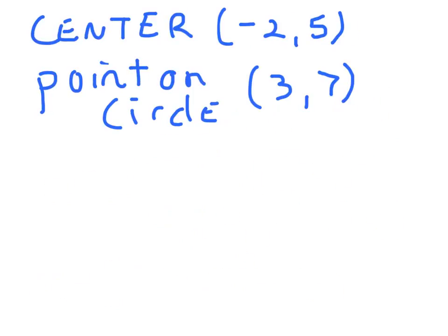Alright, here we go again. We're told where the center is. We're told a point on the circle. So again, the center tells us two-thirds of that equation. We'll get to that in a minute. We need to find the radius. Actually, we need to find r squared. So we need to find the distance between these two points. So that's a distance formula.